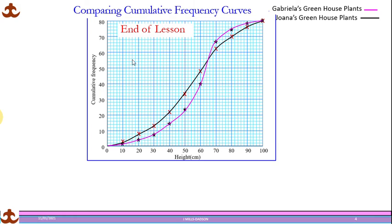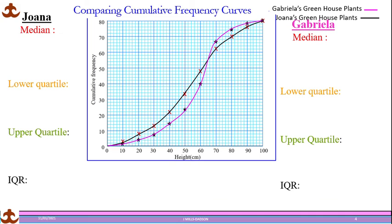Now, what if we have two cumulative frequency curves? How do we compare them without using a box plot? The pink curve represents plants from Gabriella's greenhouse and the black one from Joanna's greenhouse. Both measured 80 plants. To compare, we need to work out the median and interquartile range for each, going step by step to estimate these values from the graph.